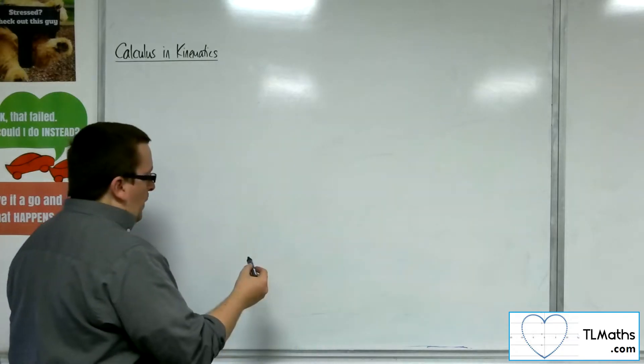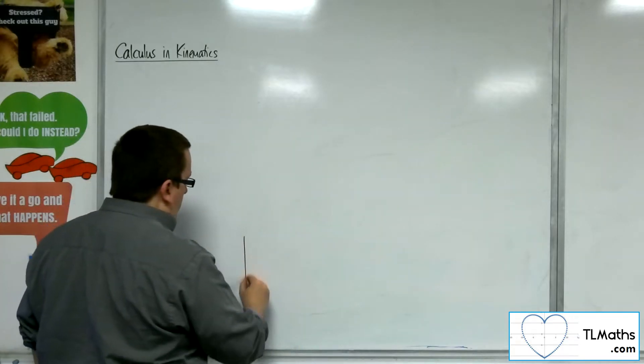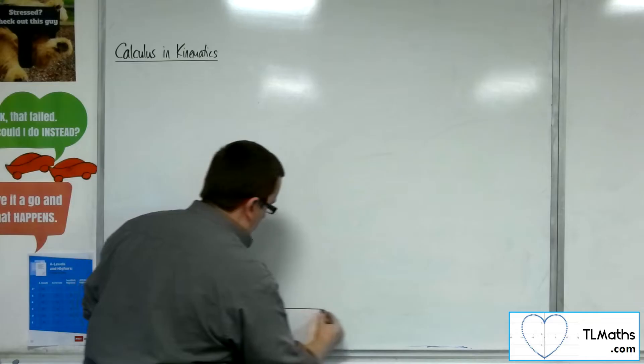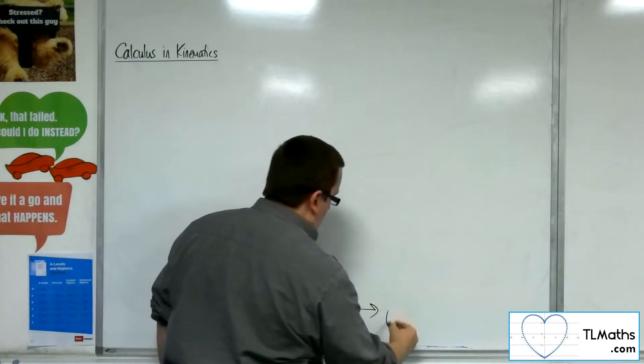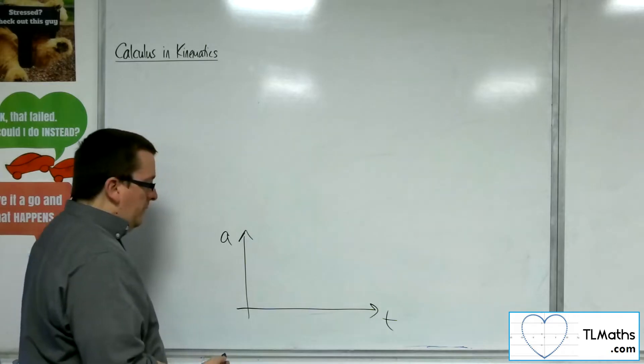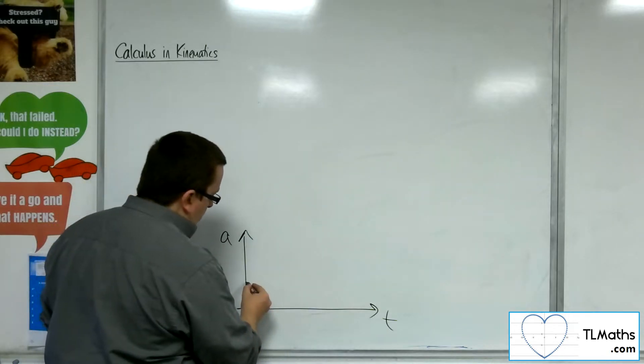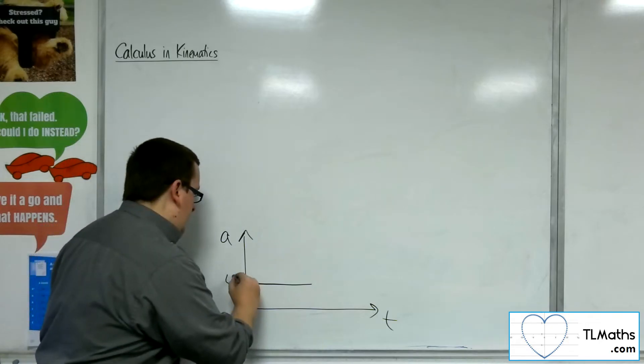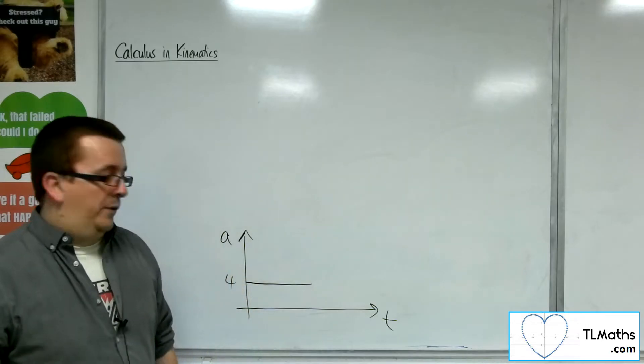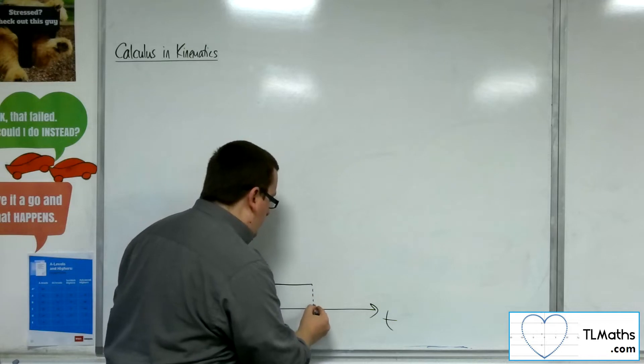So in the situations that we've had when we've been plotting acceleration against time, what we've had is that perhaps acceleration is constant at, let's say, 4 metres per second per second for a certain amount of time.